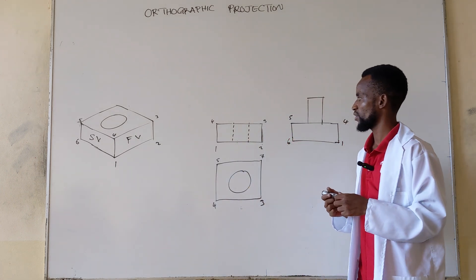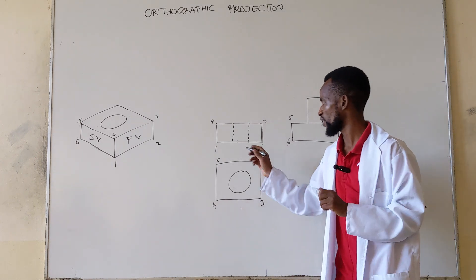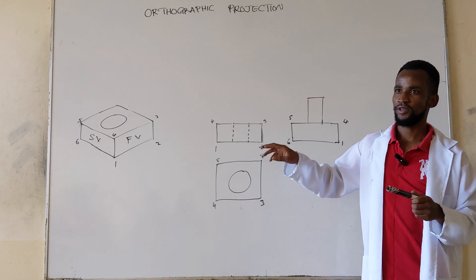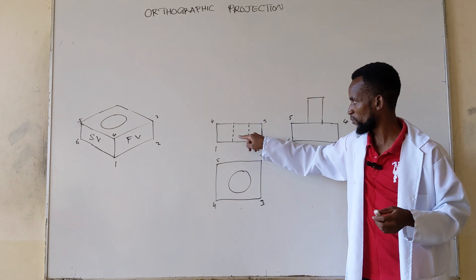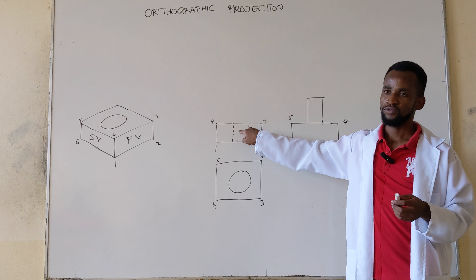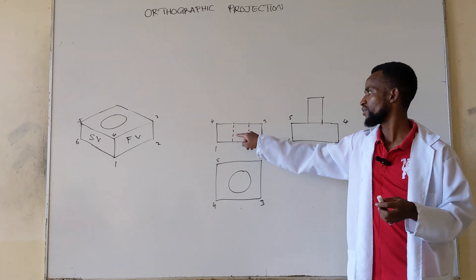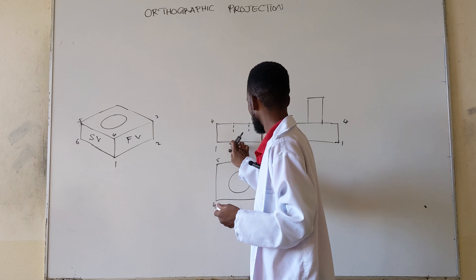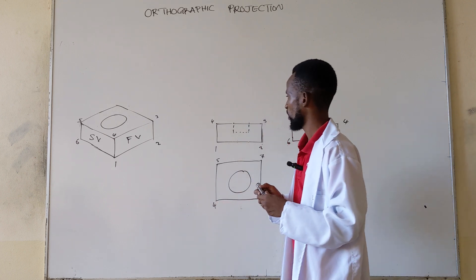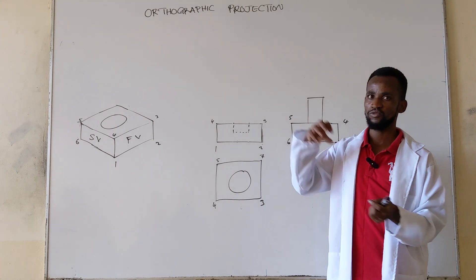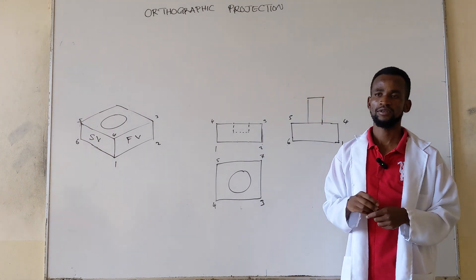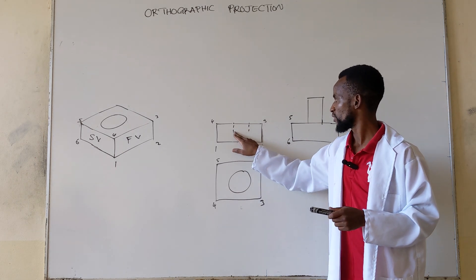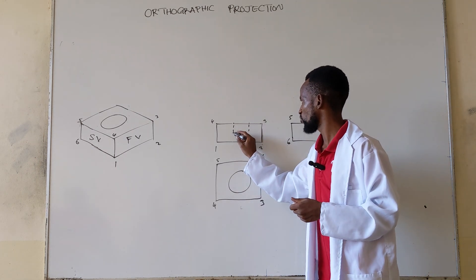We use hidden details to show that there is a through hole from this point to that point. If the hole was not a through hole — maybe it was ending somewhere — these lines should have ended there. For example, we can have a situation where the hole is not a through hole; it's just ending somewhere in the middle.